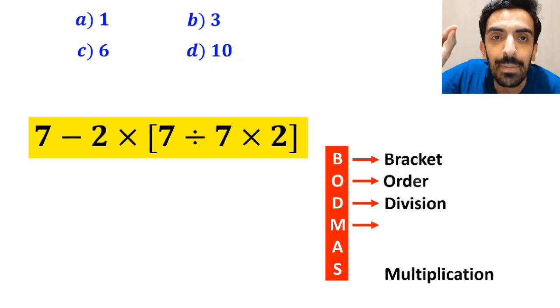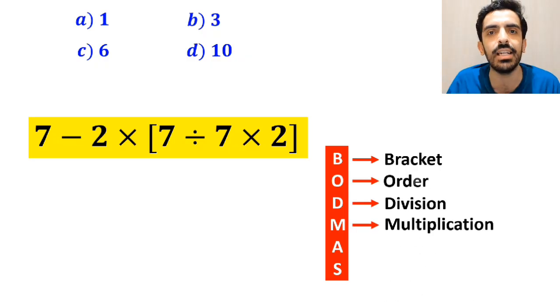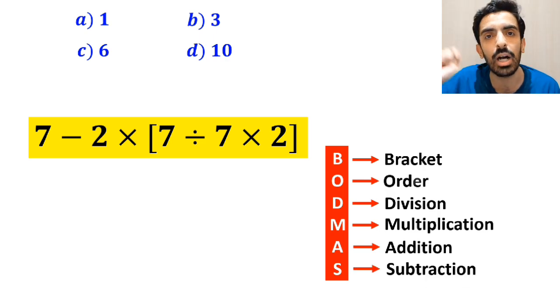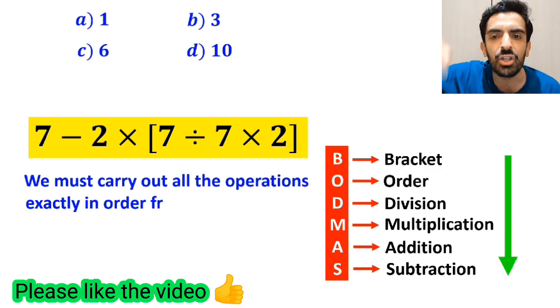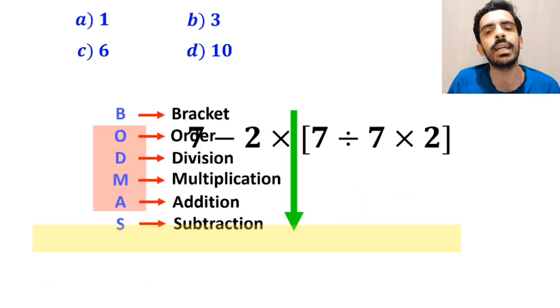And this rule: B stands for bracket, O stands for order, D stands for division, M stands for multiplication, A stands for addition, and S stands for subtraction. We must carry out all the operations exactly in order from top to bottom.